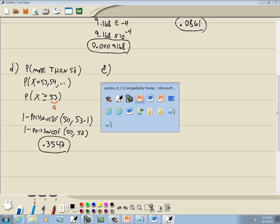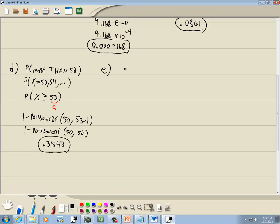And let's look at E. At least 60 calls come in. So at least 60. Well, this would include 60. So it would be 60, 61, dot, dot, dot. Goes forever. So this would be x is greater than or equal to 60. So this will be from our formula, 1 minus Poisson CDF, our mean, which is still 50. And then A minus 1. So this would be 60 minus 1.